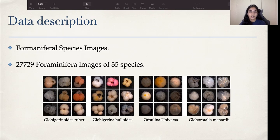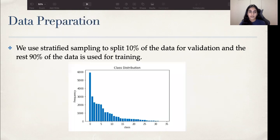The dataset consists of 27,729 foraminiferal images of 35 species. You can see some of the images from the four species that were in the dataset here. As we encountered class imbalance in our dataset, which can be seen in the graph, we used stratified sampling to generate a validation set. The validation set has 10% of the total data, and the rest is used for training.